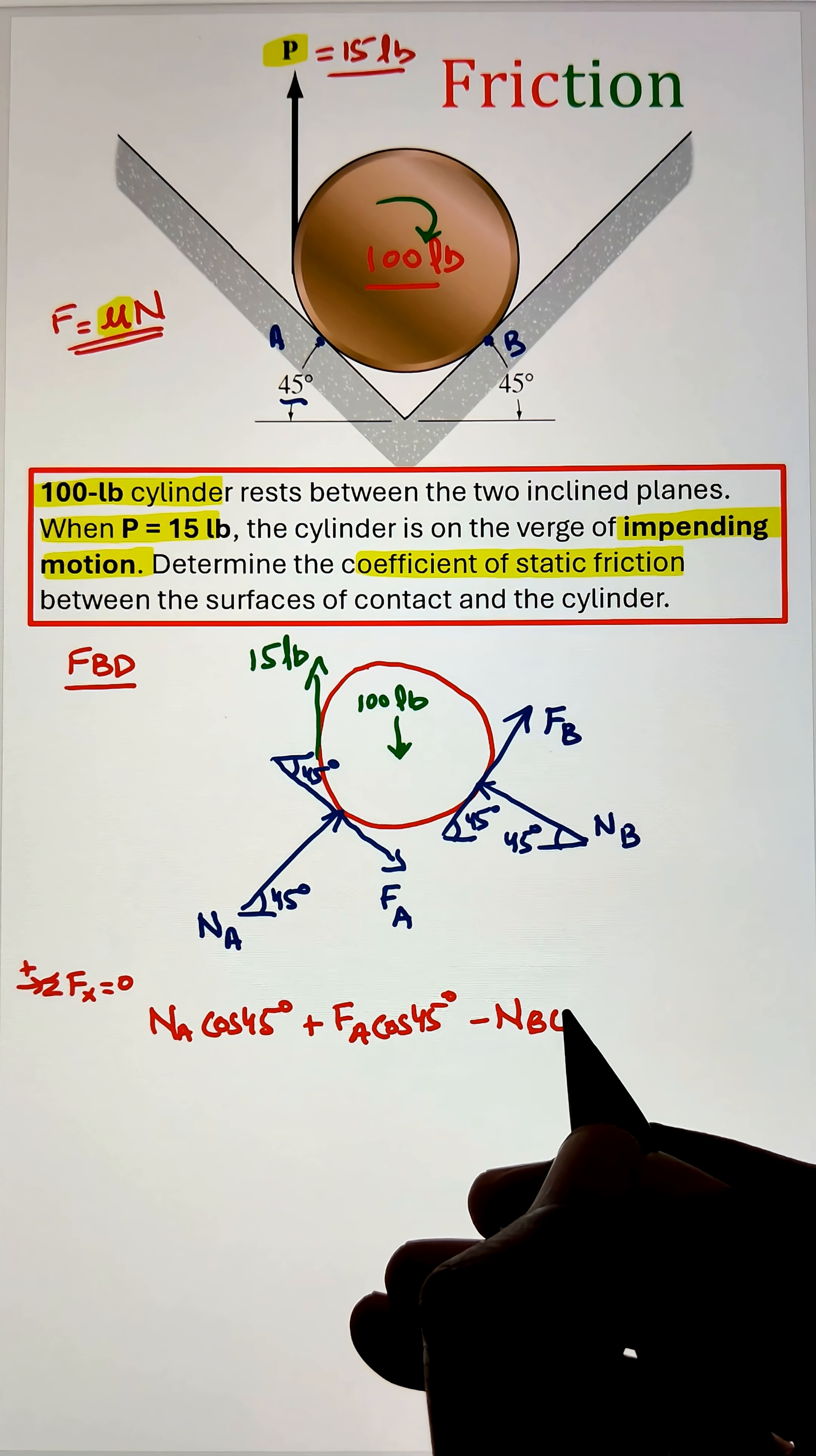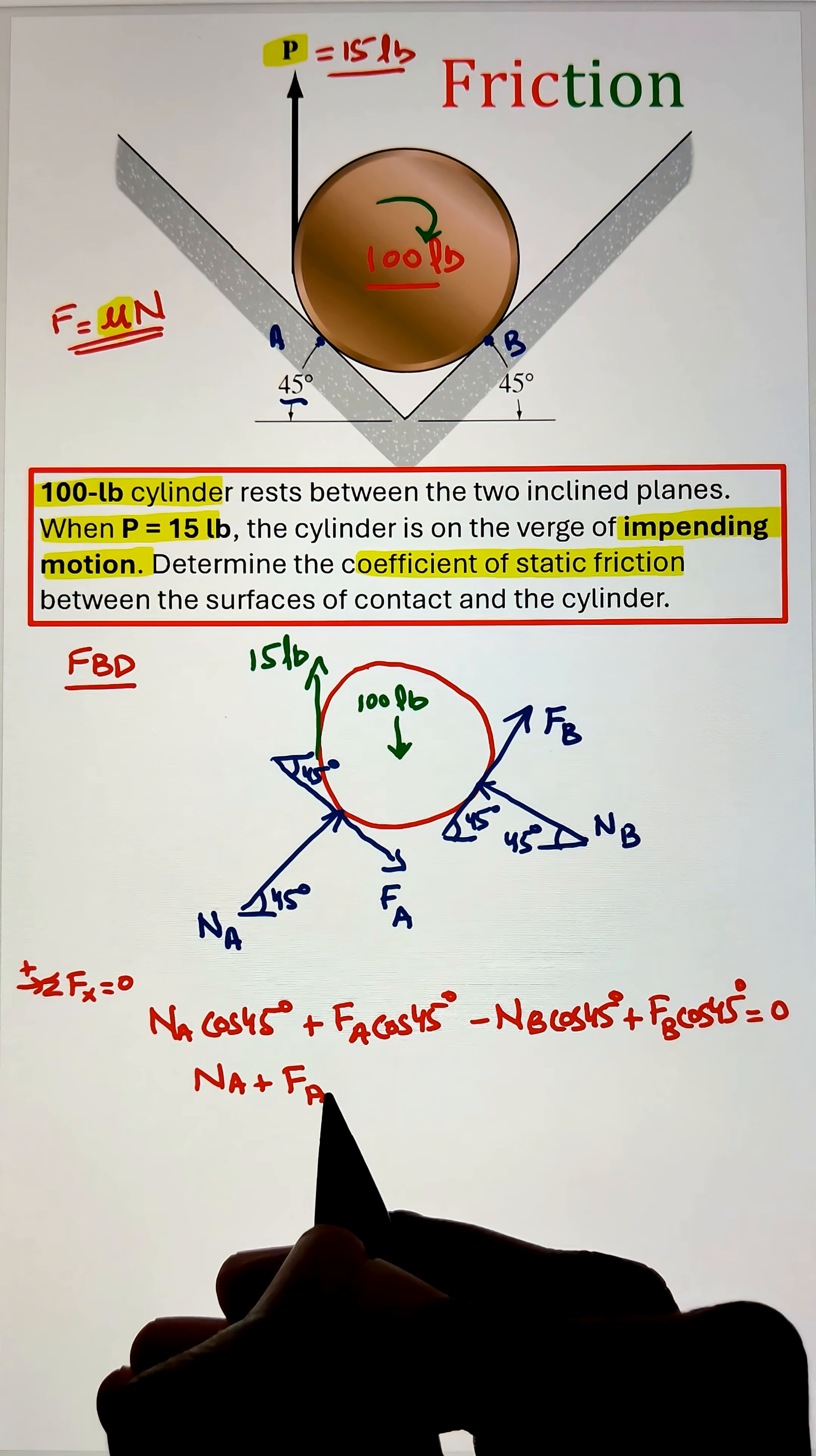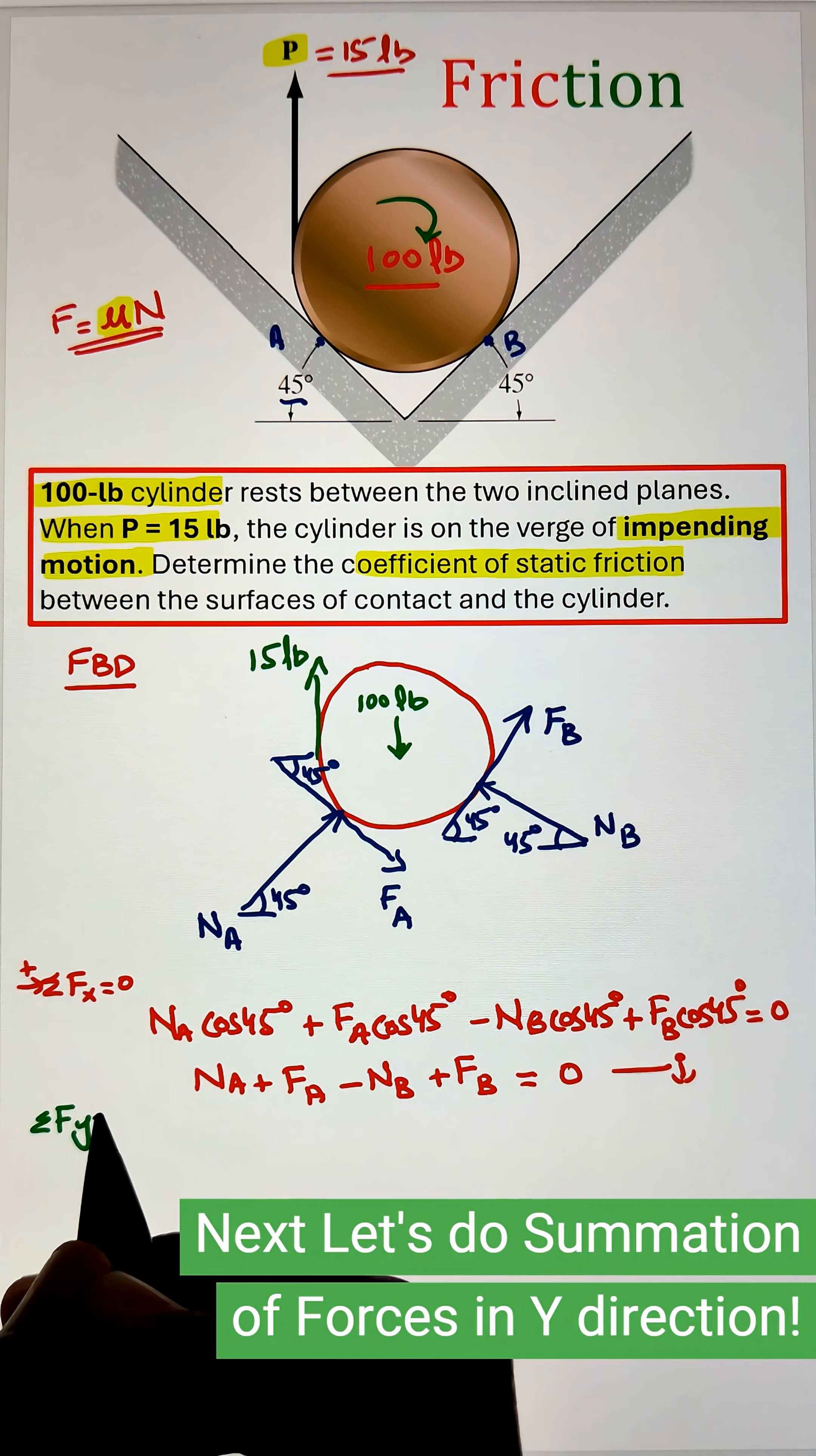Now once we have the free body diagram let's go ahead and apply our equilibrium equation of summation of forces acting along the x direction equals to zero. Adding all the normal and frictional force components we get our final equation of N A plus F A minus N B plus F B equals to zero.